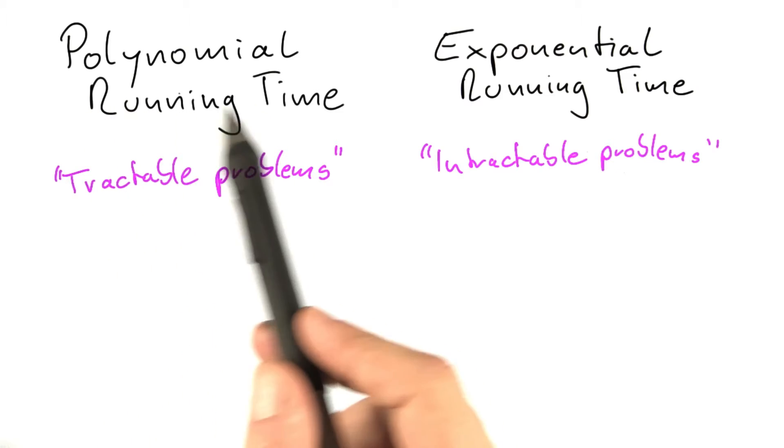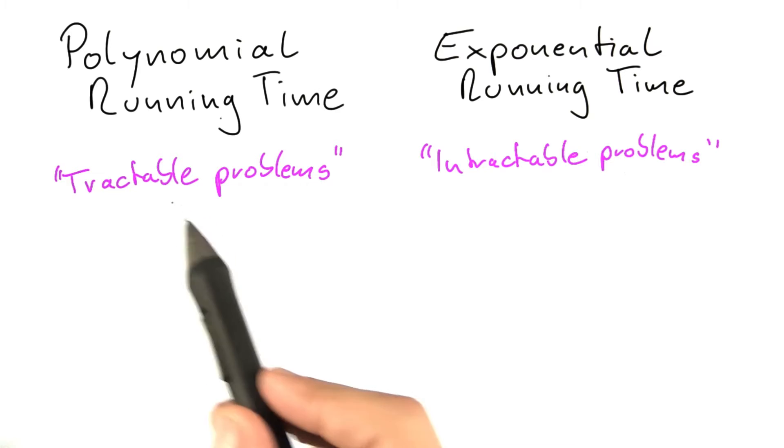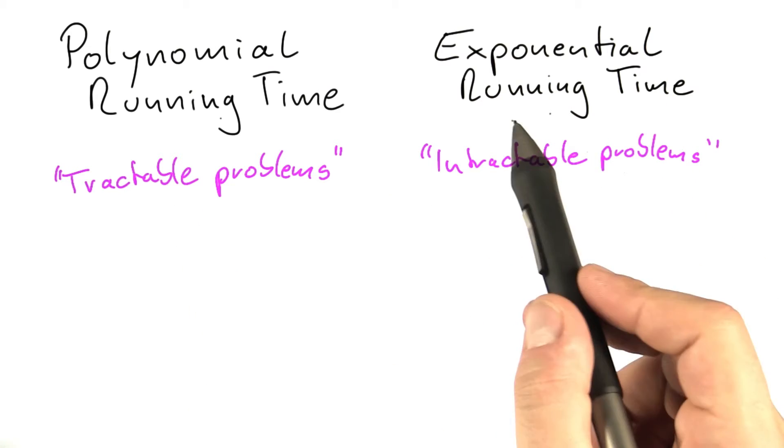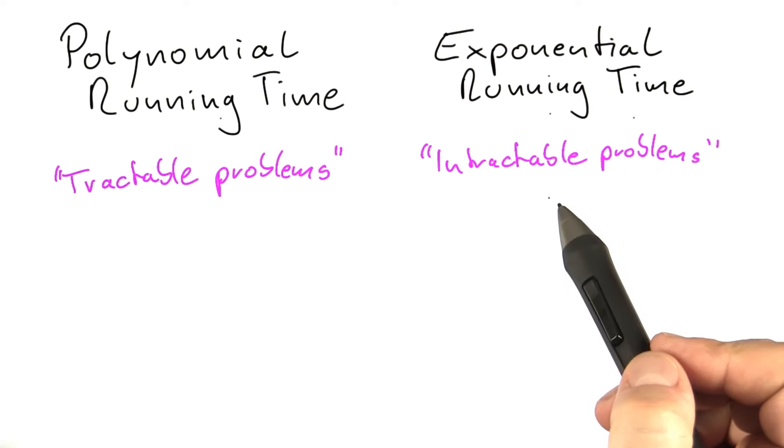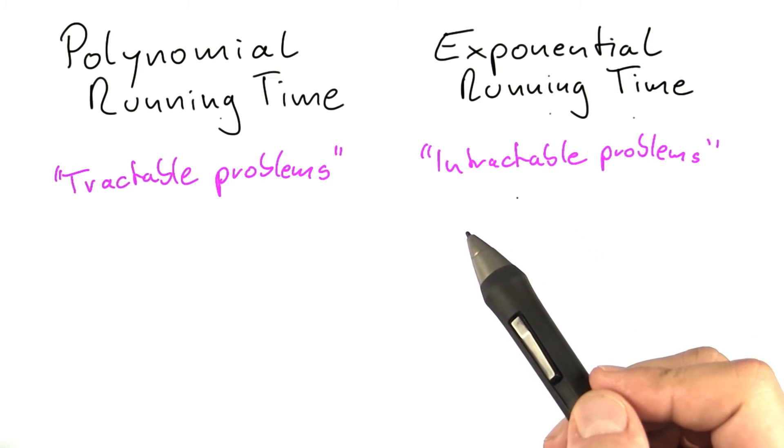We already talked about polynomial running time being associated with tractability and exponential running time being associated with intractability. This can lead to some borderline cases where you would probably argue.